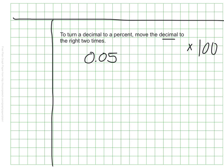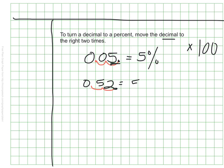So for example, five hundredths: I have my decimal point, I move it once, twice. That means the percent is 5%, because my whole number is five. I could have 52 hundredths — again, I move that decimal once, twice, to signify multiplying by 100. And that would put my decimal right at the end, making it 52%.